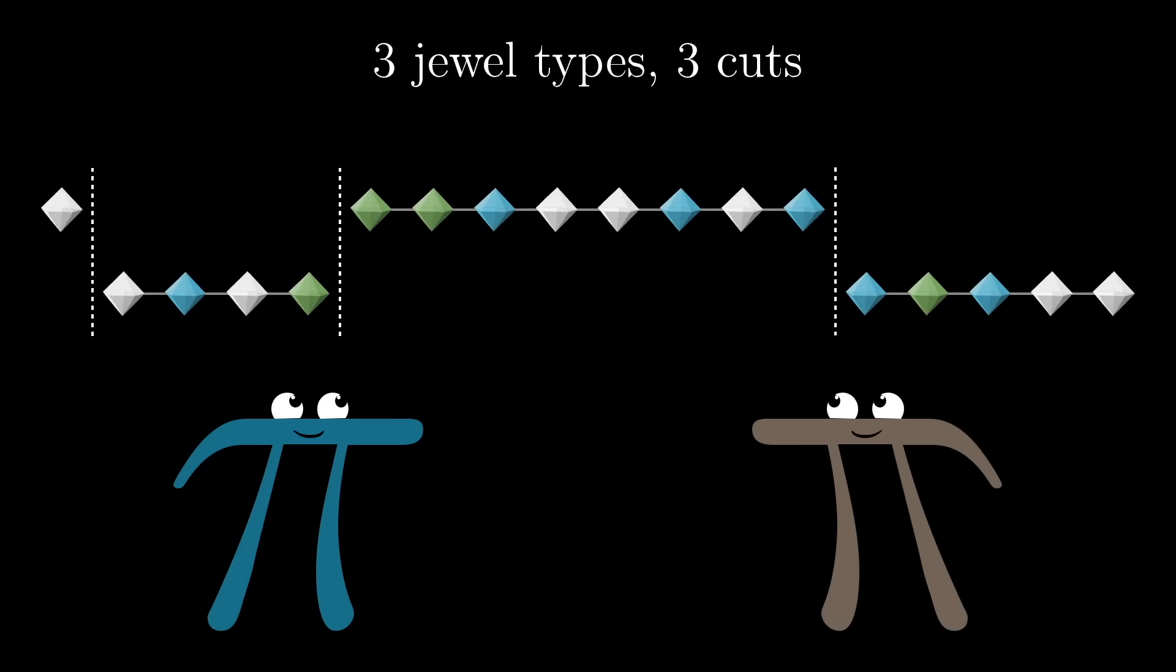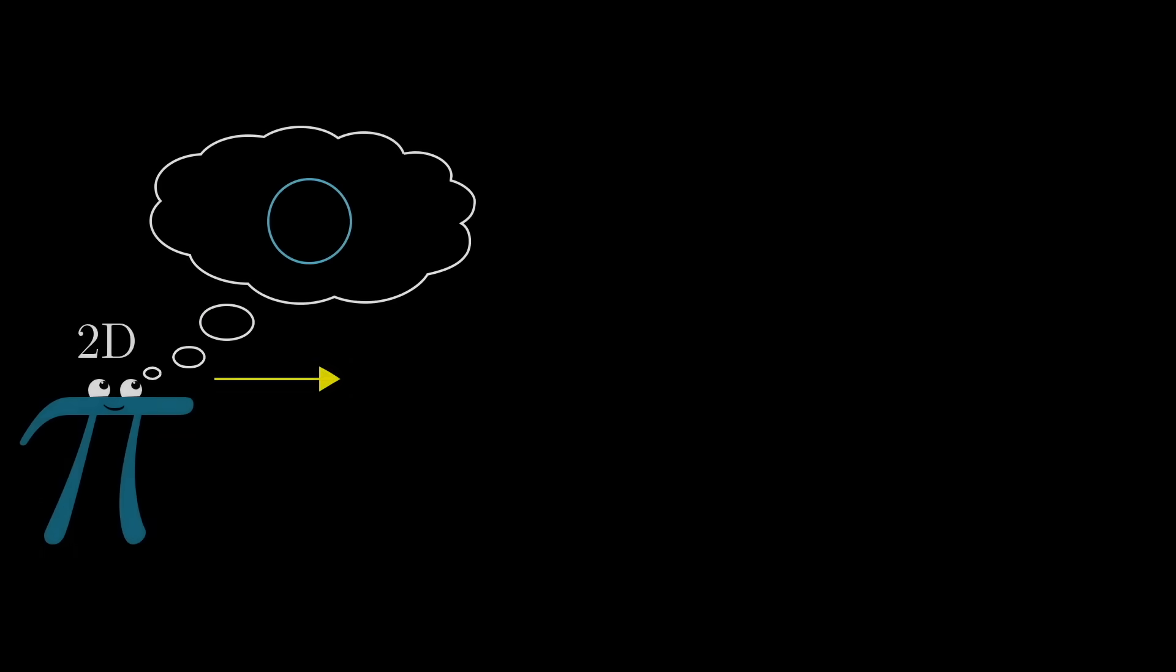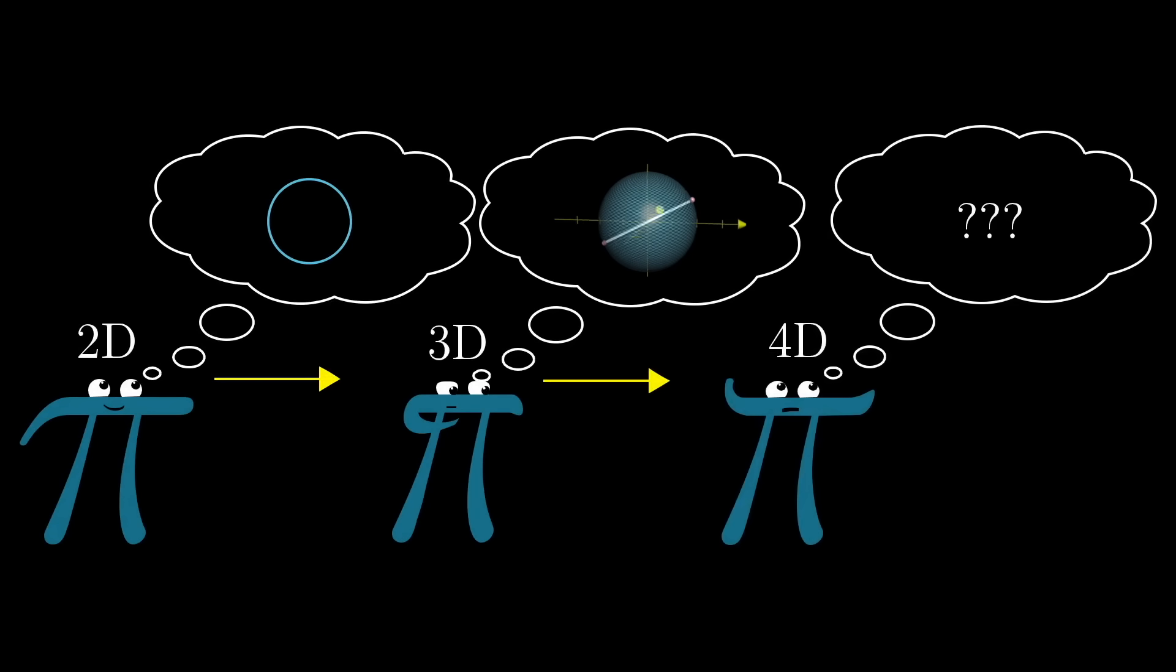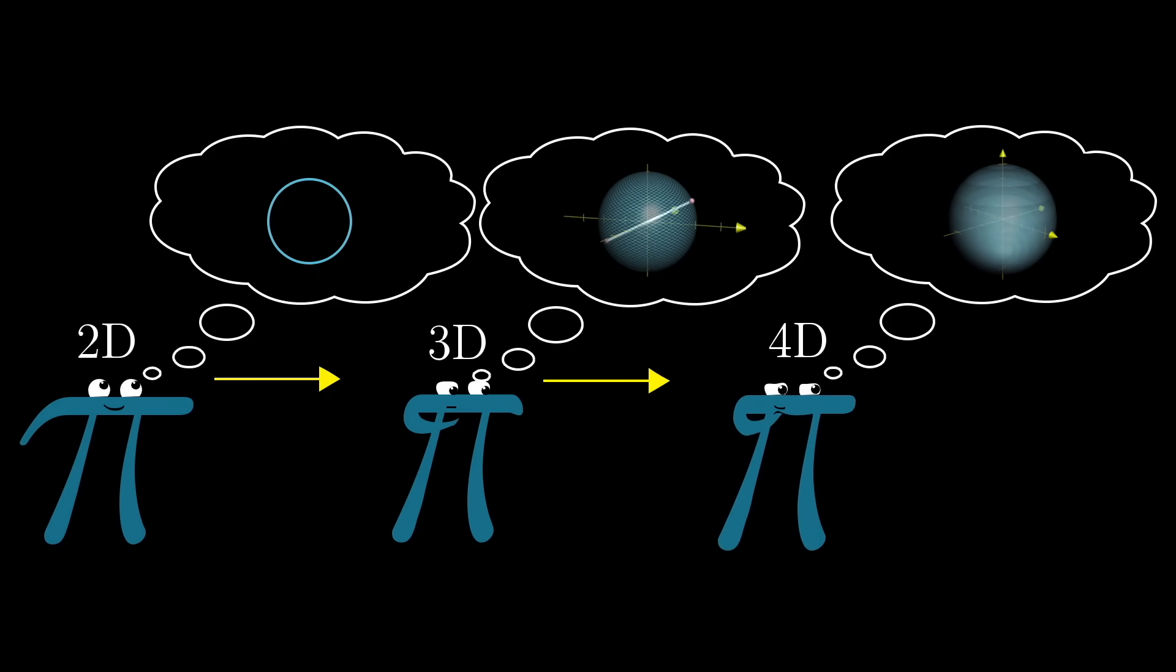And maybe, just maybe, this gives you an inkling of why mathematicians care about things like higher dimensional spheres, regardless of whether or not they exist in physical reality. It's not always about the sphere per se, it's about what other problems in math they can be used to encode.